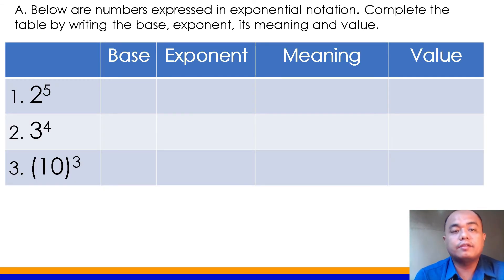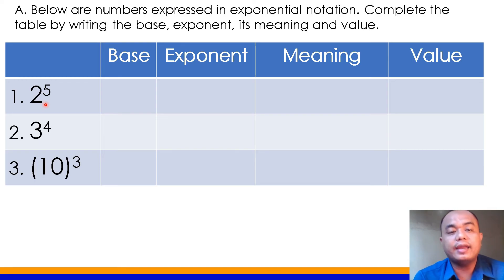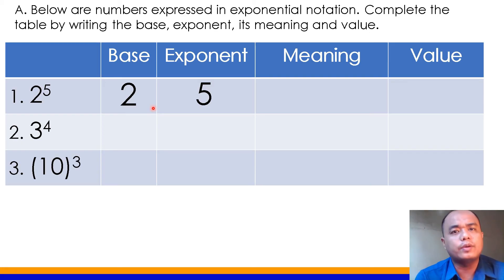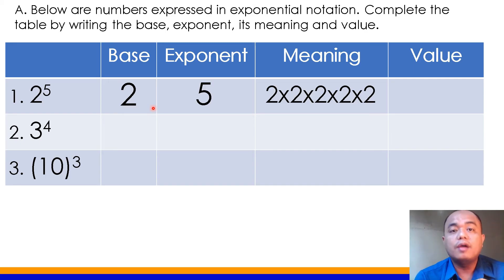Let's perform this activity. Below are numbers expressed in exponential notation. Complete the table by writing the base, the exponent, its meaning, and value. Number 1 is read as 2 to the exponent 5, or 2 to the 5th power. Our base here is 2 and our exponent is 5. The meaning of 2 to the exponent 5 is 2 times 2 times 2 times 2 times 2.